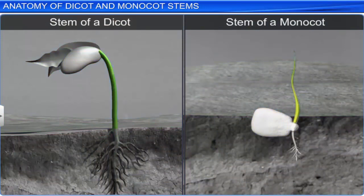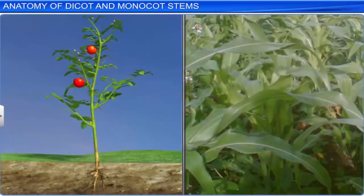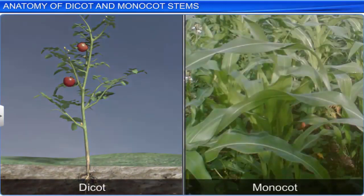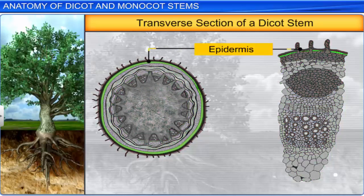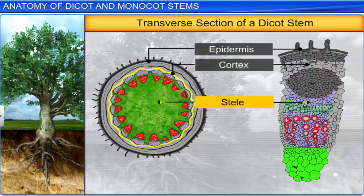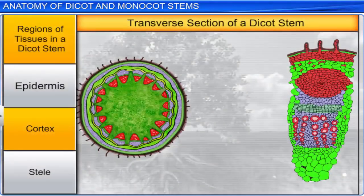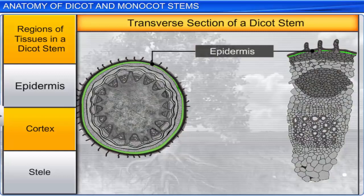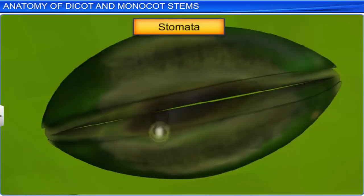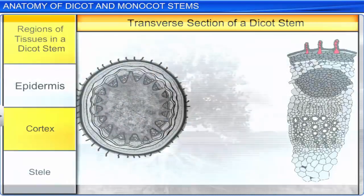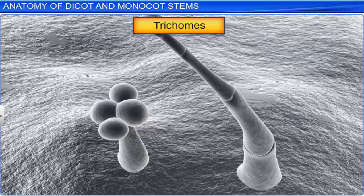A stem is the main axis or stalk of a plant and it develops from the plumule of a germinating seed. Let's examine the internal structure of a stem in dicot and monocot plants. Here is the transverse section of a dicot stem. The regions of tissues in this stem include epidermis, cortex, and stele. The outermost layer of the stem, or epidermis, consists of a layer of closely packed cells and is covered with a thin waterproof layer called the cuticle. The epidermis also contains stomata and hair-like outgrowths known as trichomes.